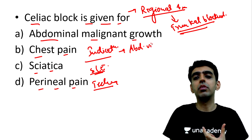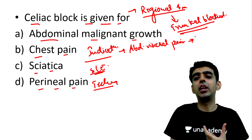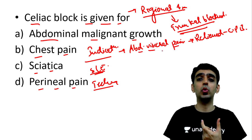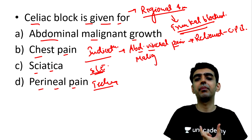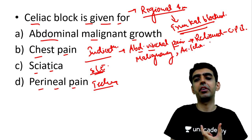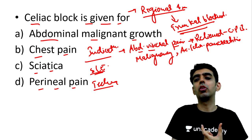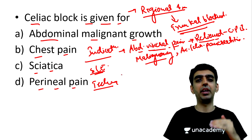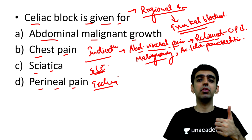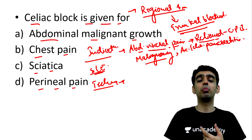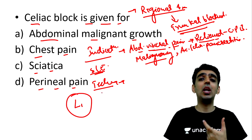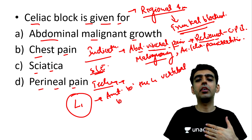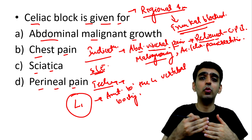The celiac plexus block is mainly used for abdominal visceral pain. The causes of abdominal visceral pain for which it is indicated are abdominal malignancies and acute or chronic pancreatitis. The technique involves guiding the needle anterior to the body of the L1 vertebra, where the sympathetic plexus of the celiac ganglia lies, and depositing the local anesthetic there.